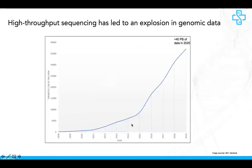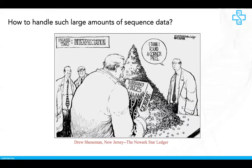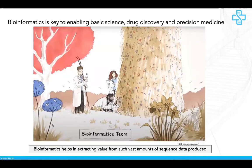The amount of data generated each year has been growing linearly or exponentially. Already in 2020, we have over 40 petabytes of publicly accessible genomic data, not to mention all the consortia and their private databases. This reminds me of a newspaper article comparing the Human Genome Project to a billion-piece puzzle. Bioinformatics is the key discipline aimed at enabling basic science, direct discovery, and precision medicine by extracting value from such vast amounts of sequence data.